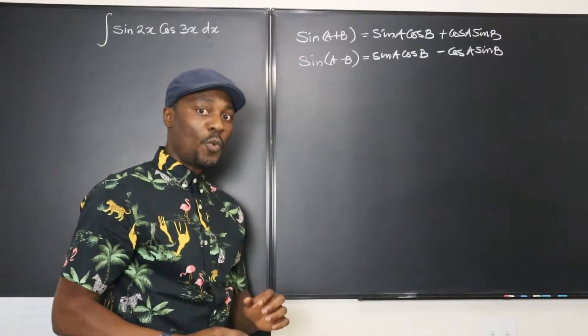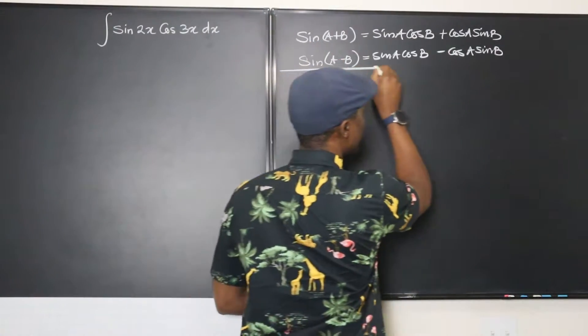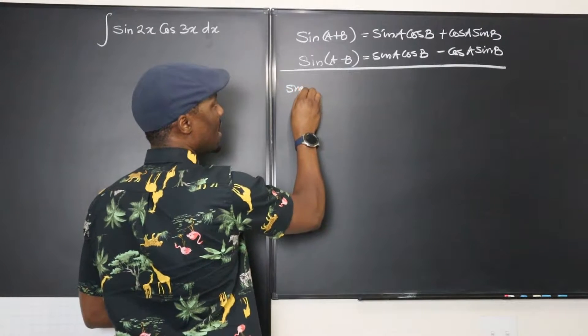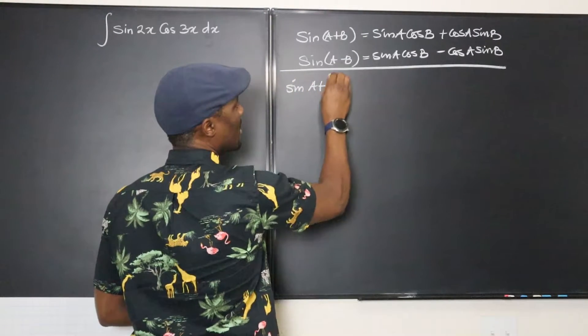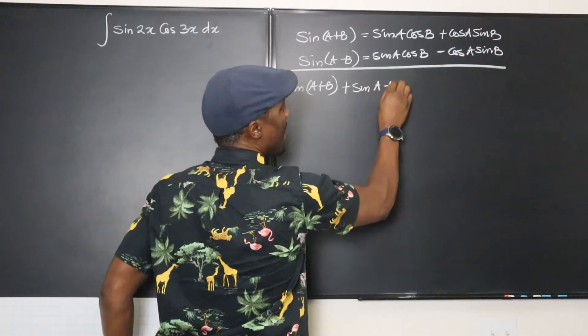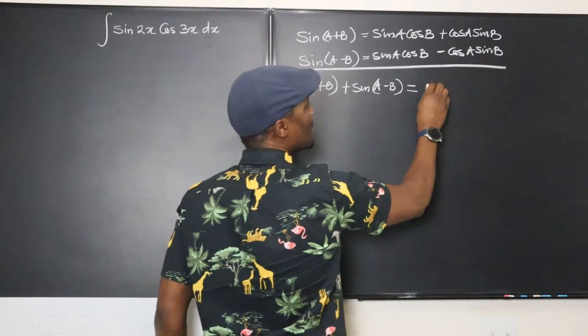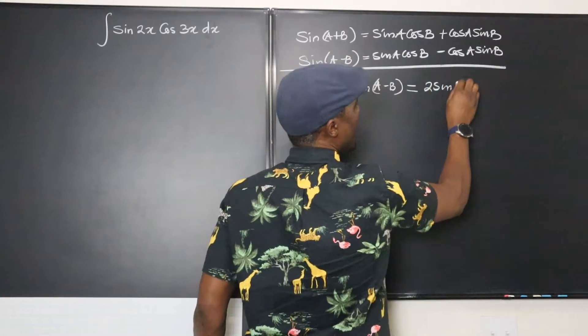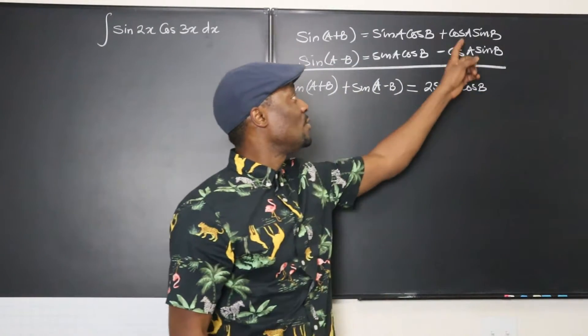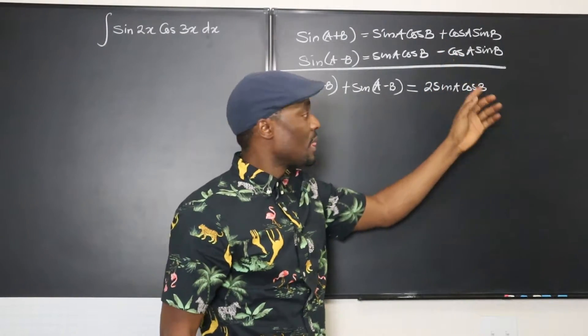So one good thing we could do is why don't we just add? If we add both expressions, we're gonna have sine(a + b) + sine(a - b) will be equal to the sum of these two, which is gonna be 2 sine a cosine b. Now when I said let us add, I knew that these two were gonna zero out because one is positive and the other is negative.